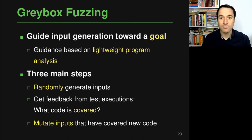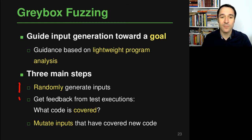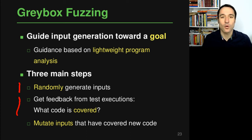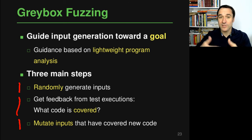Gray box fuzzing typically consists of three steps. First, randomly generate some inputs and give them to the program. Second, while the program is executing, the fuzzer gets feedback from the test execution — for example, what code is covered, and whether some new code is covered. This tells us which generated inputs are useful in getting closer to the goal. Third, mutate those inputs that have been good in terms of getting closer to the overall goal, focusing on inputs that covered new code.